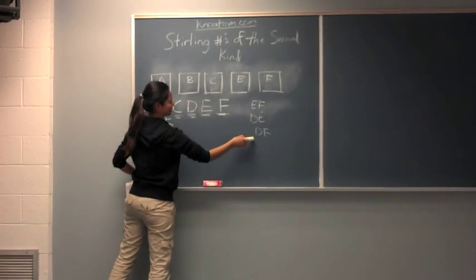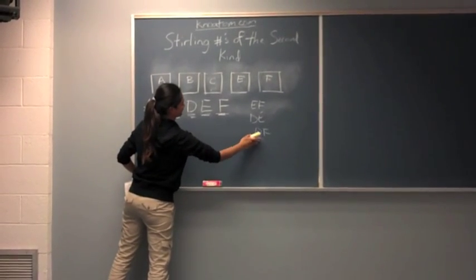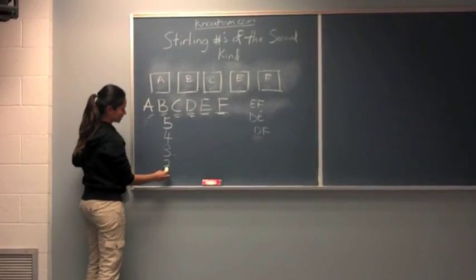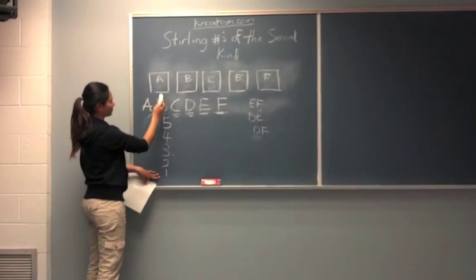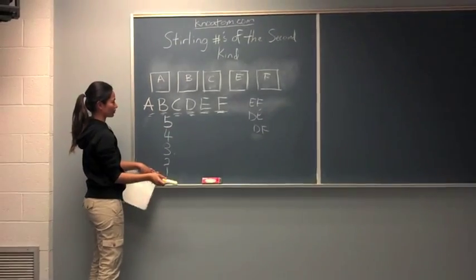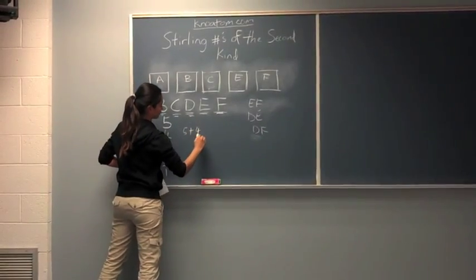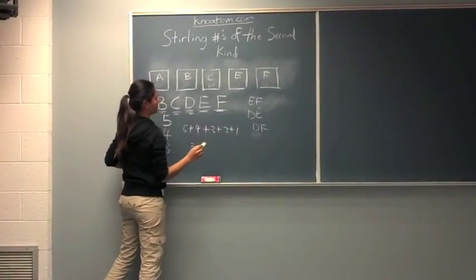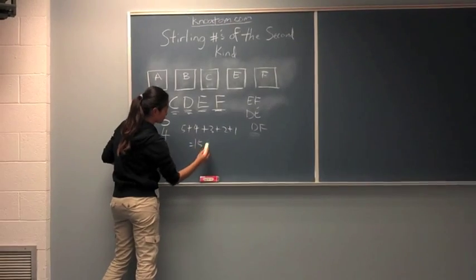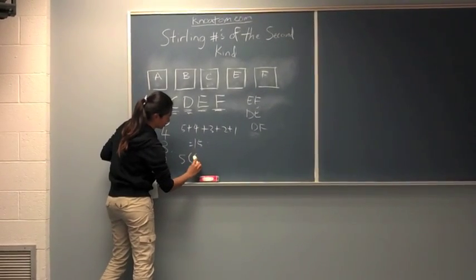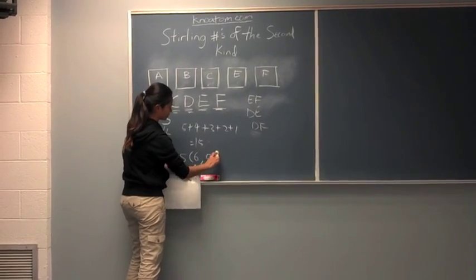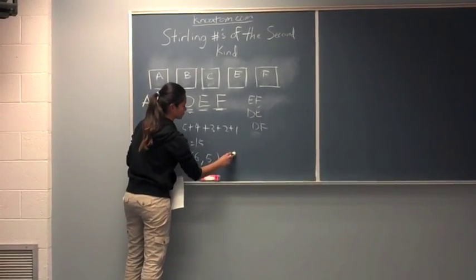we'll get 2 choices to put C into the room, because we already had these combinations, and then just one choice left when we get to A. So, when we sum up 5 plus 4 plus 3 plus 2 plus 1, we get 15. So, Stirling number of putting 6 people into 5 rooms is equal to 15.